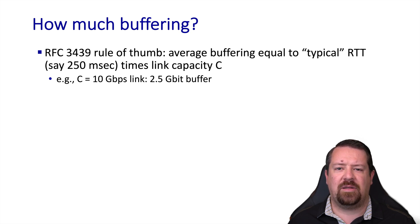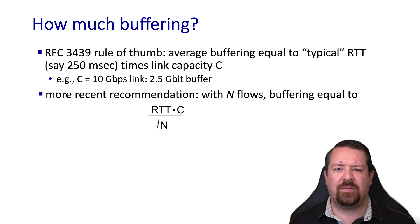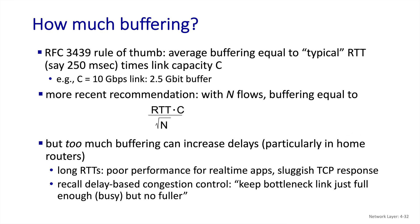There is an implicit assumption in this calculation that the queue is dominated by a single flow. However, in the core of the network, this is generally not the case. So more recent recommendations take the number of flows into account, recognizing that with more statistical multiplexing between flows, less buffering is needed. It's quite important to note that too much buffering is a bad thing. TCP doesn't back off until it loses packets, and congestion won't induce lost packets until the queue is full. So the inference here is that TCP will always keep the queues full at bottleneck links. The bigger the queue is, the higher the queuing delay will be. So we want the queue to be just big enough to handle bursts of arriving packets and keep the output link fully utilized, but no more. Any excess buffering will just increase our queuing delay. If you want to know more about this, google the term buffer bloat.